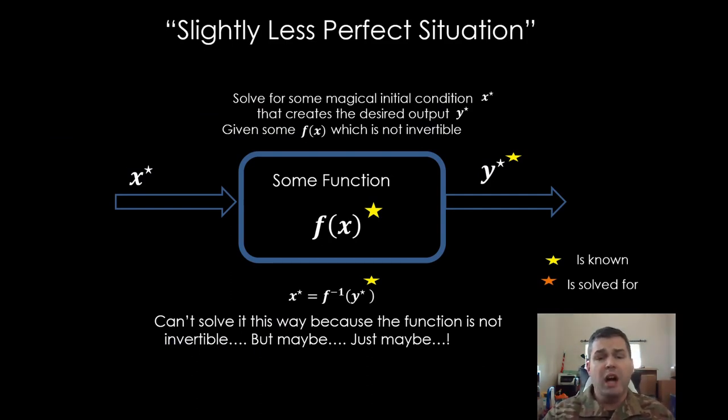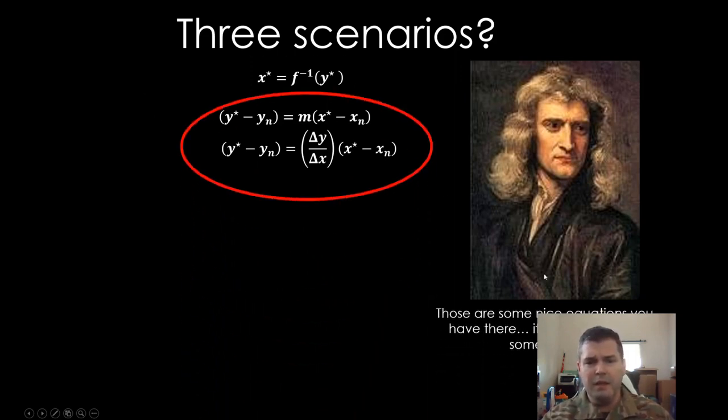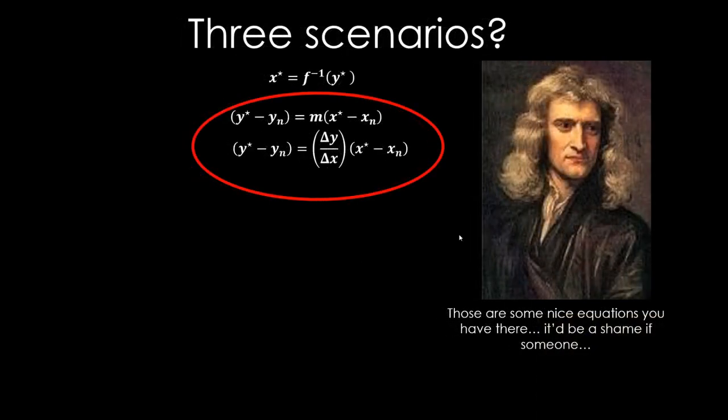Things started to get more challenging. We got nonlinear functions. Sometimes we even got nonlinear functions that we couldn't invert. So now all we have is a nonlinear function that we cannot invert and a desired output value Y star. So how can we solve for this X star? Well, let's go back to the three tools that we already have. We have a function. We want to use this one but we can't. Maybe there's something here that we can use.